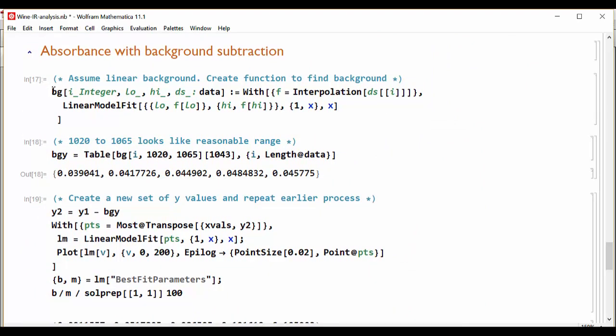So we create a background function which again uses the interpolated data, finding a linear model fit between two points, low and high. From that previous example, we see that the peak is encompassed by the wave numbers 1020 and 1065. So we create a straight line between 1020 and 1065 and we get the individual backgrounds, and they are around 0.04, which is what I was expecting.